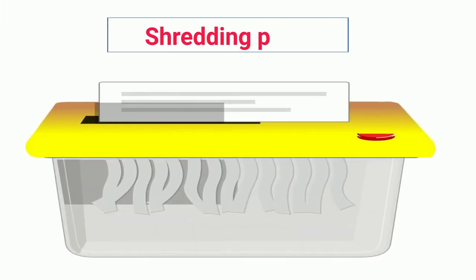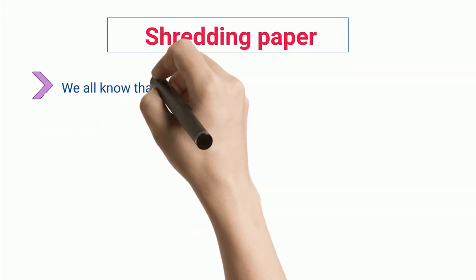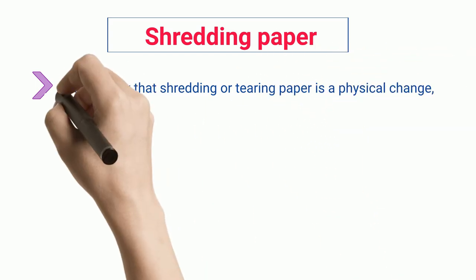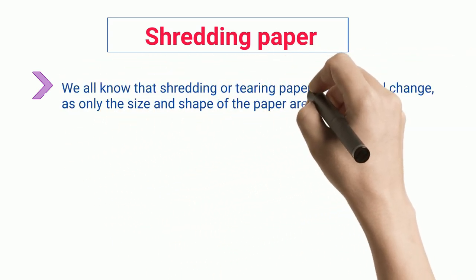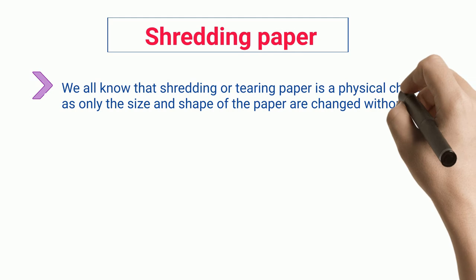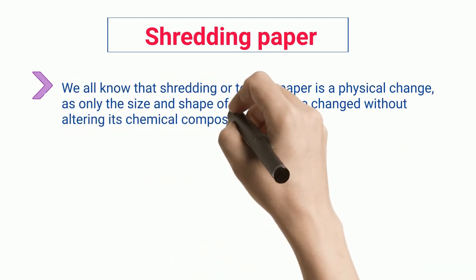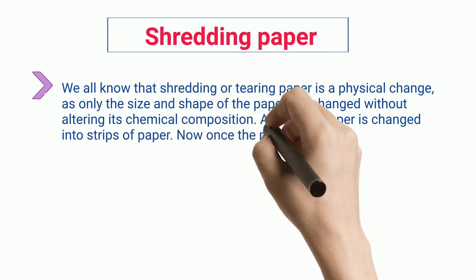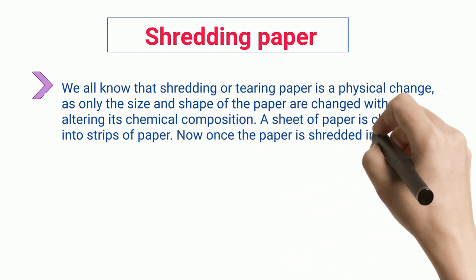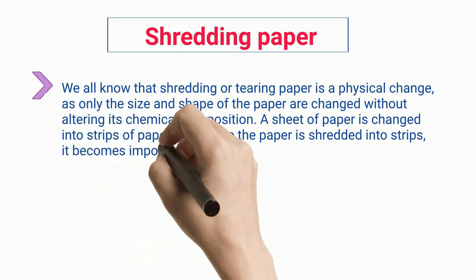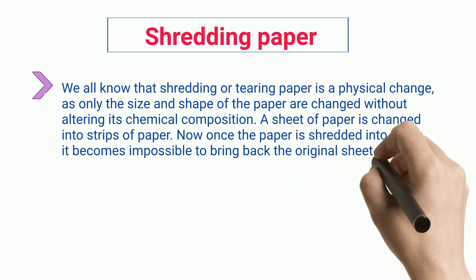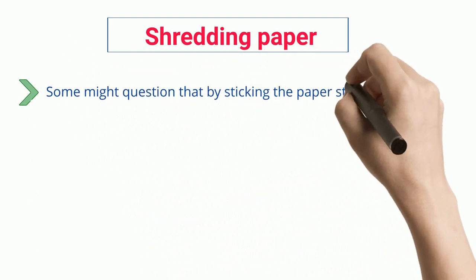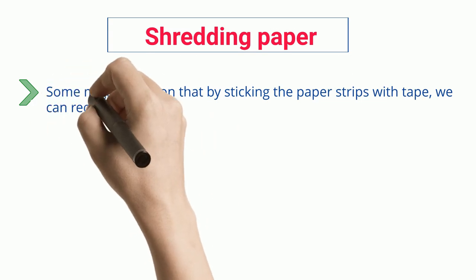Shredding Paper. We all know that shredding or tearing paper is a physical change, as only the size and shape of the paper are changed without altering its chemical composition. A sheet of paper is changed into strips of paper. Now once the paper is shredded into strips, it becomes impossible to bring back the original sheet. Some might question that by sticking the paper strips with tape, we can recover the paper.